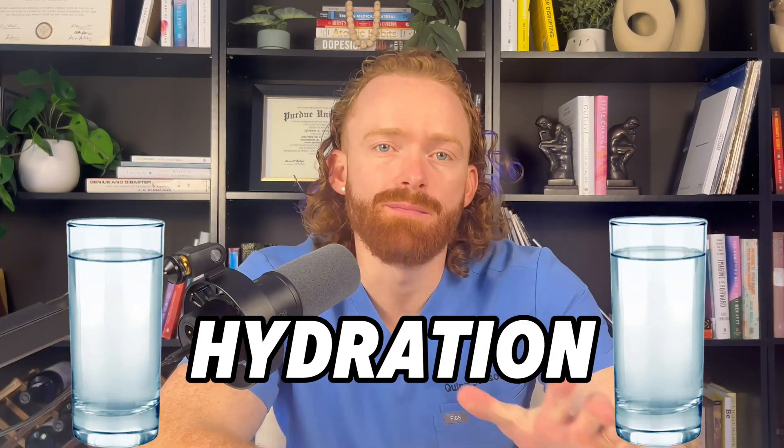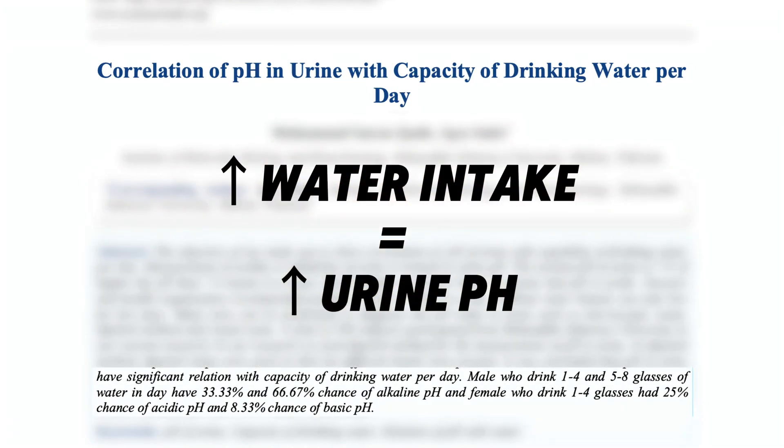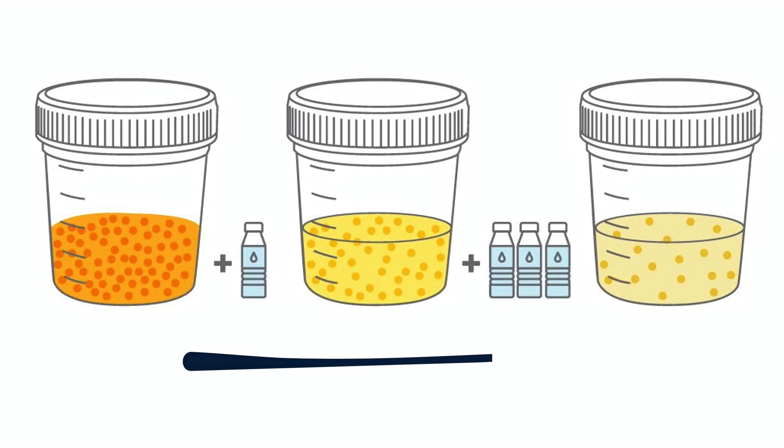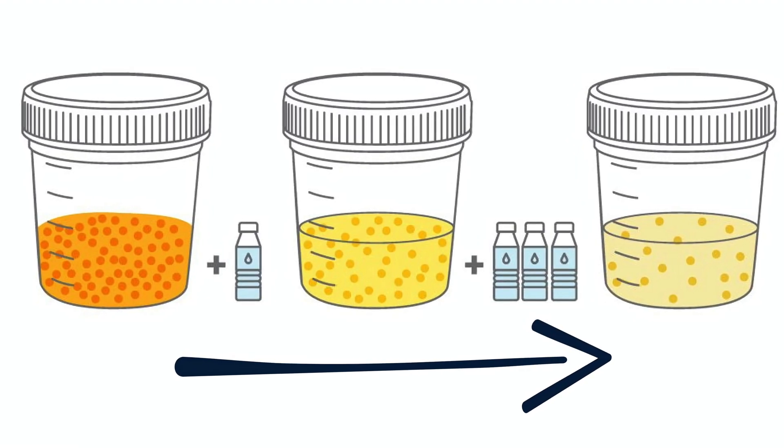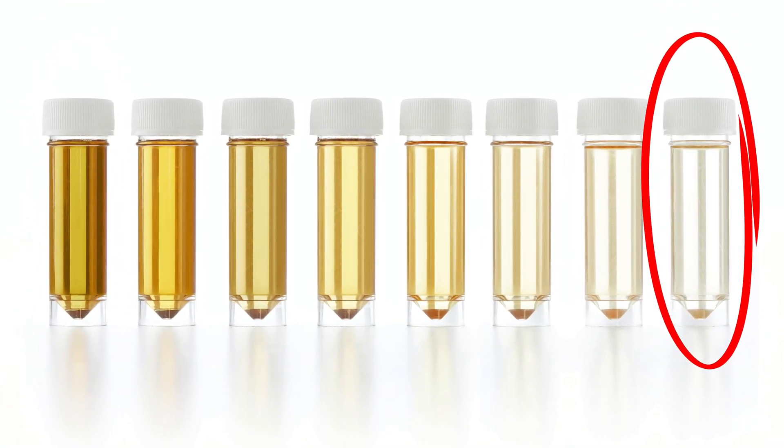The second main way to increase urine pH, outside of diet, is through hydration. Many studies show that the more water people drink, the higher their urine pH is. This makes sense — you're diluting your urine by taking in more fluid, which increases the pH because there's less acid per amount of water you're peeing out. So by drinking more, we can increase our urine pH. Especially focus on this if you test your first morning urine and it's super concentrated — very dark yellow. If your urine is a lighter color, you probably need to focus on this one less.